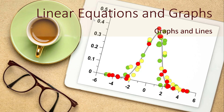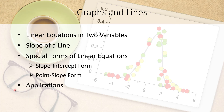Hi everybody. In this video, we are going to go over the second section in chapter one, lines and graphs, or graphs and lines. In this section, we are going to talk about linear equations in two variables, namely x and y, the slope of a line, and two special representations for linear equations: the slope-intercept form, which is the most intuitive, and the point-slope form. In a separate video, we will discuss applications.